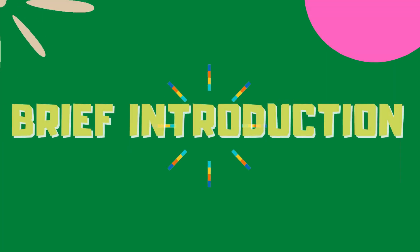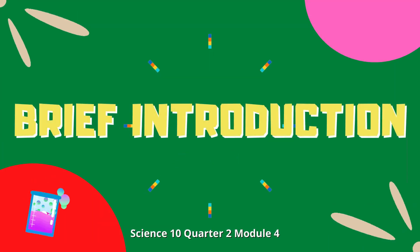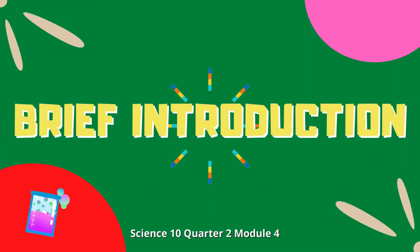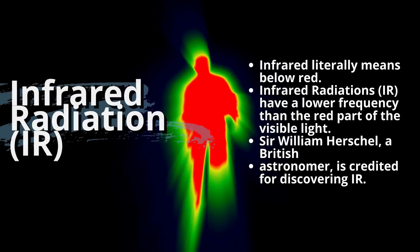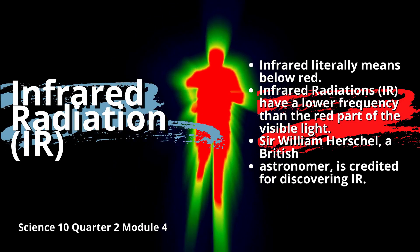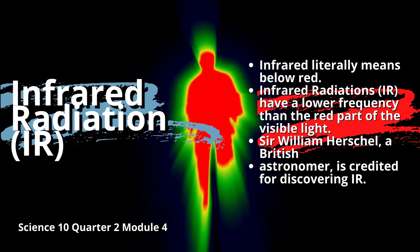Now at this point, I will discuss the practical applications of the regions of the electromagnetic spectrum, specifically the regions of infrared, visible light, ultraviolet, and X-rays.